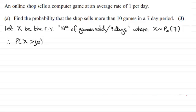Now in order to work this out we need to use the cumulative distribution tables for the Poisson distribution. And to do that we need to do one minus the probability that X is less than or equal to 10.